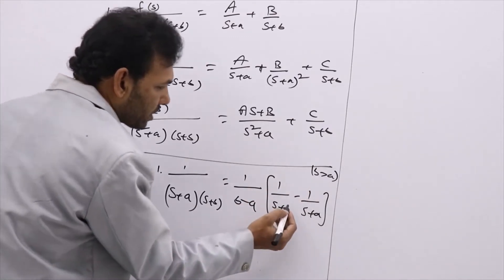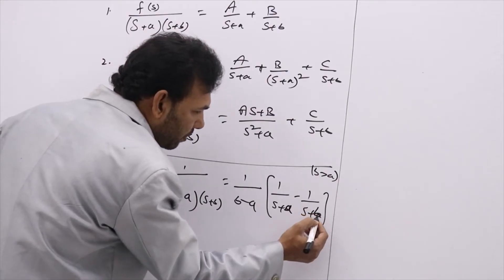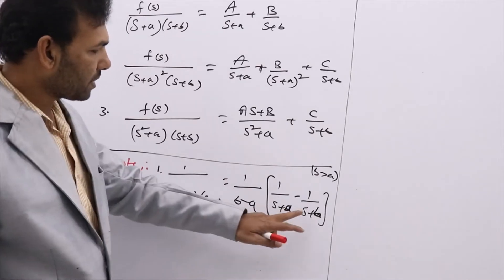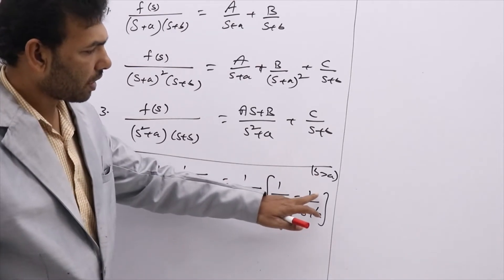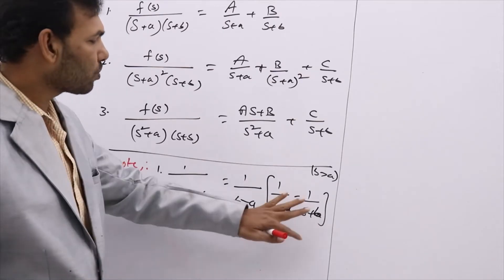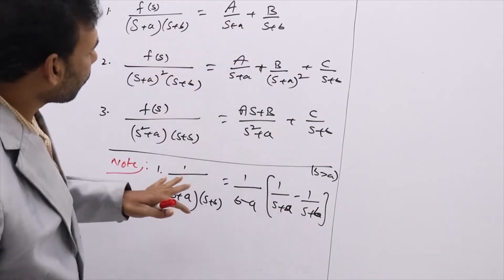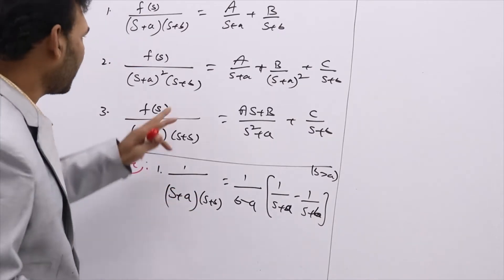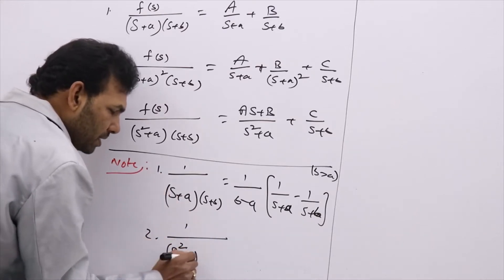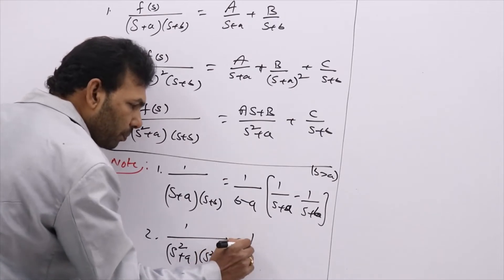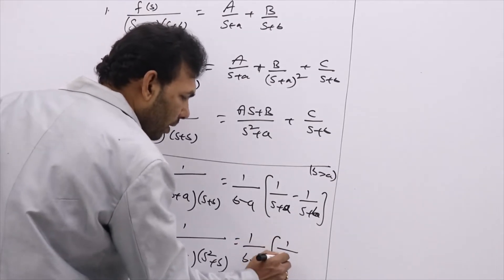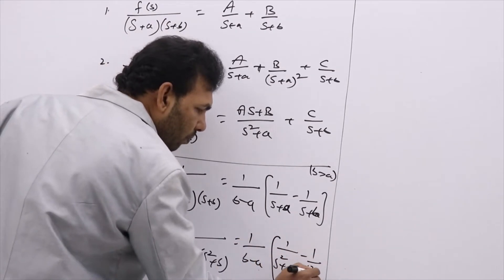This first shortcut may not feel very useful, but we can use the second one very frequently. If you have 1/[(s²+a)(s²+b)], you can write it as 1/(b−a) times [1/(s²+a) − 1/(s²+b)]. Think about how lengthy the problem would be if you used Rule 3 — you'd need to write As+B and Cs+D and solve for four unknowns. This shortcut condenses that into a single step.